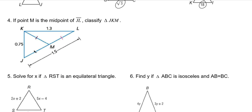So if M is the midpoint, then these two are the same, which makes each of the individual ones 0.75 here, 0.75 here, in order to make 1.5 as a total. And if both of those are 0.75, this one's also 0.75, which makes JKM an equilateral triangle.